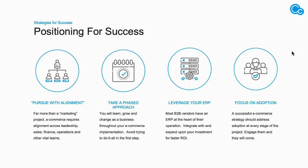The third bucket is leveraging your ERP system. That ERP system is the backbone of your organization — it houses all of the business-critical data. We want to make sure that anything customers are interacting with reflects that accurate data: their pricing, their order history, even their products. We want that user experience to mimic the ERP data and mimic the experience they would get from your organization in person or over the phone.